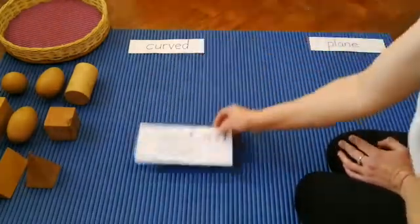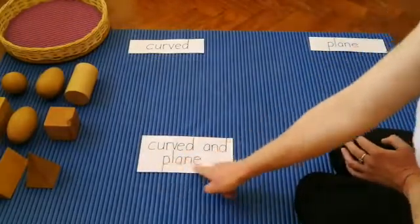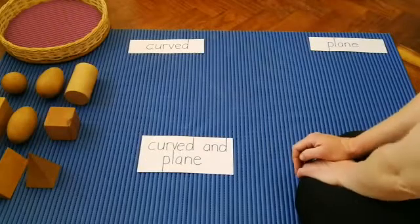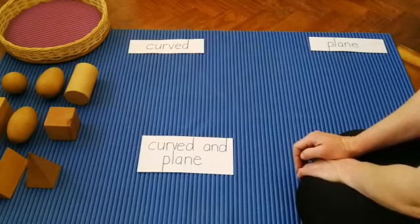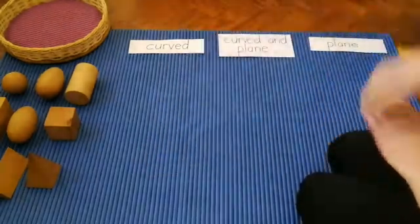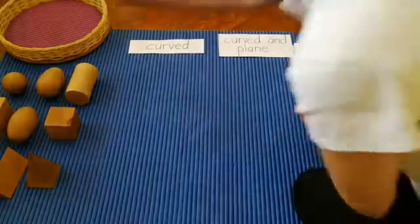And my last label says curved and plain. That means sometimes it can roll and sometimes it can't. It has both curved and plain sides. So let's choose our first solid and see which one it belongs under.